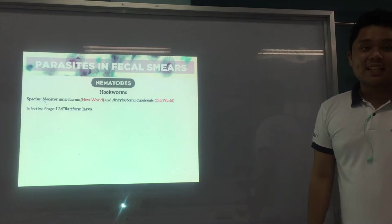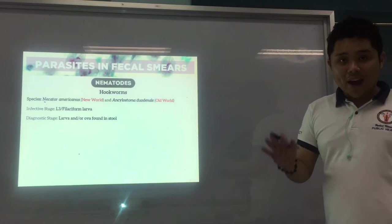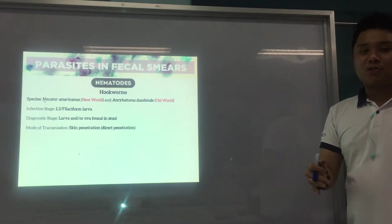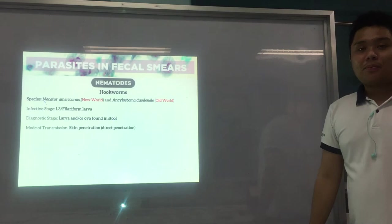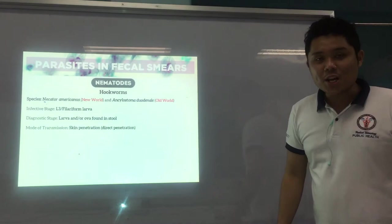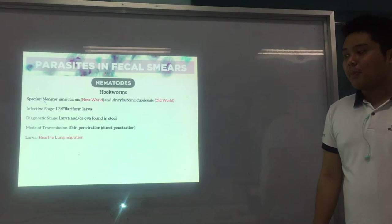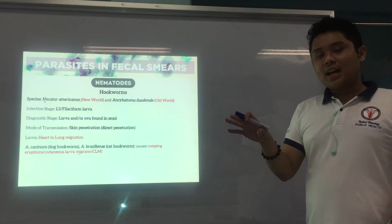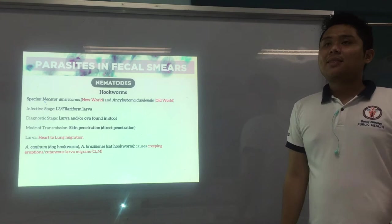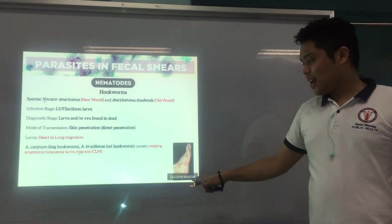The diagnostic stage could be larva and/or ova found in the stool. The mode of transmission is different — it's skin penetration, direct penetration, especially through unprotected feet when walking barefoot. The larva exhibits heart-to-lung migration. We also have animal hookworms: Ancylostoma caninum for dogs and Ancylostoma braziliense for cats, which exhibit creeping eruption or cutaneous larva migrans — the larva moves under the skin.